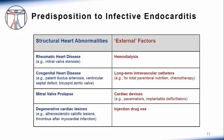Factors that can predispose patients to developing infective endocarditis can be categorized into structural heart abnormalities as well as external factors. Structural heart abnormalities include mitral valve abnormalities that occur with rheumatic heart disease, defects that occur with congenital heart disease, mitral valve prolapse which is often seen in women, and degenerative cardiac lesions such as calcific lesions found with atherosclerosis, as seen in the elderly.